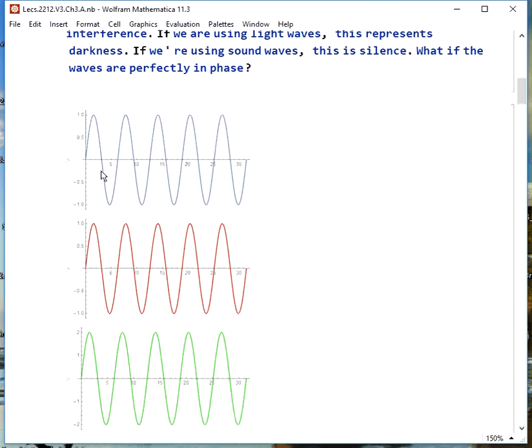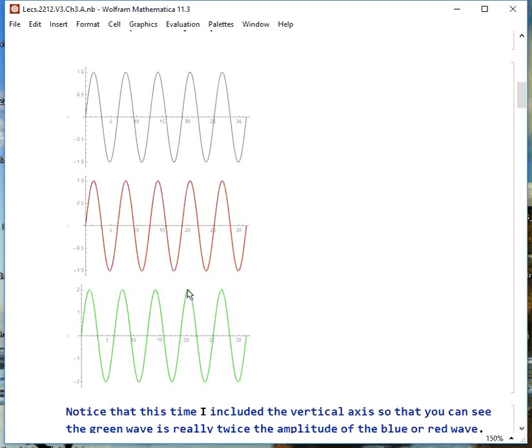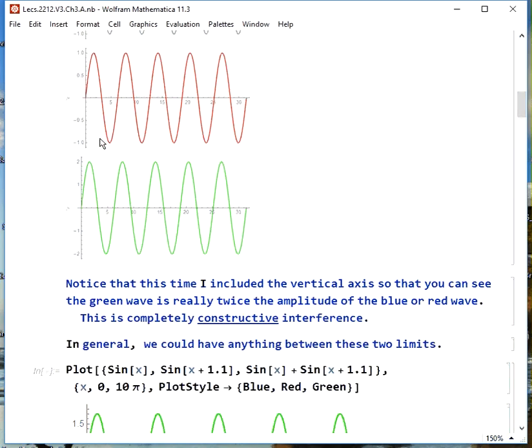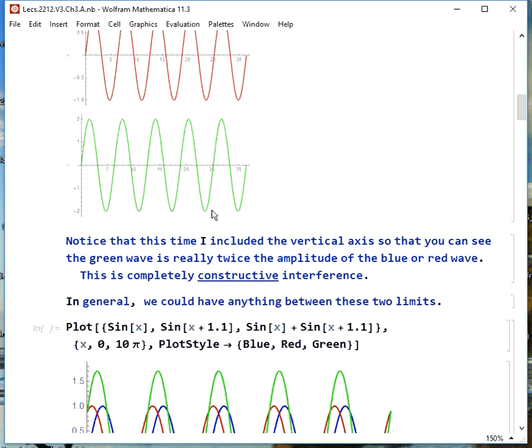What if we add the two waves and they are perfectly in phase? Now we get this combination that's twice the amplitude because we're just adding these directly. Notice if you look at the scale, the green peak here is two instead of one unit. This is called completely constructive interference. So if we were talking about sound, we'd get something loud here. If we were talking about light, we'd get a bright spot here.